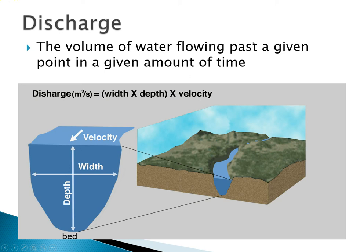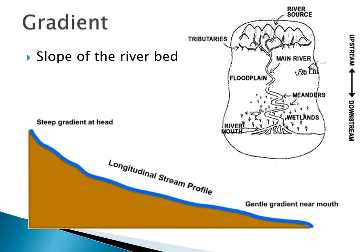A couple of terms to know: the bottom of the river channel is called the bed, and the sides of the river channel are called the banks. The discharge — if you have more water, the water tends to flow faster, which affects velocity. Another thing that affects velocity is the gradient, which is the slope of the river bed. The gradient is highest at the head, or beginning, of the stream, which tends to be up in mountainous higher areas, and it gets more and more gentle as you go down. This is called the longitudinal stream profile.